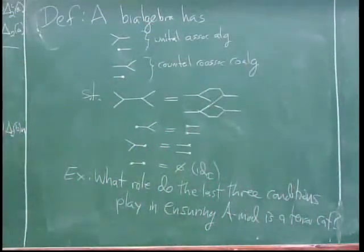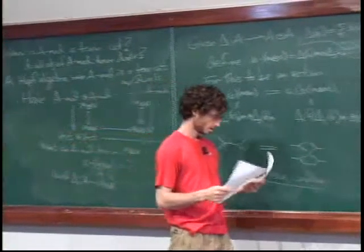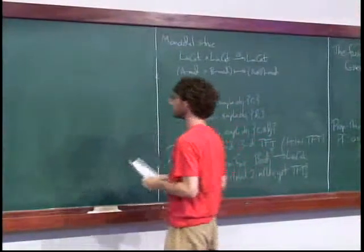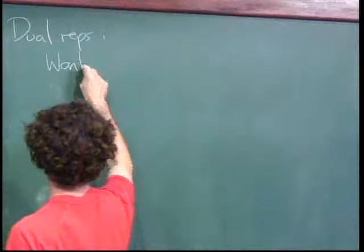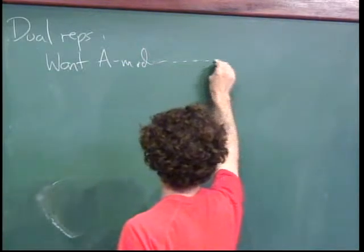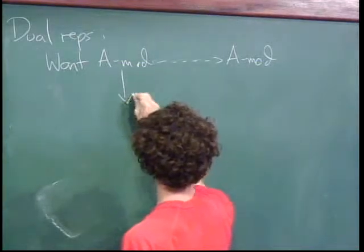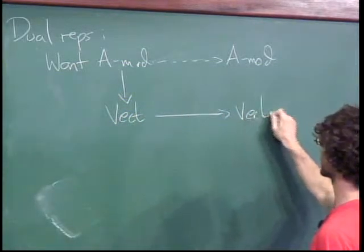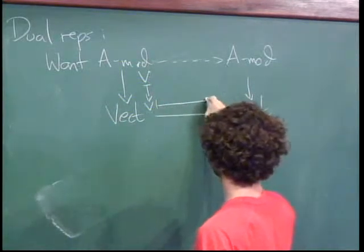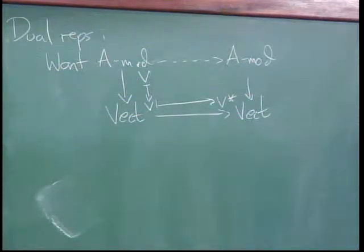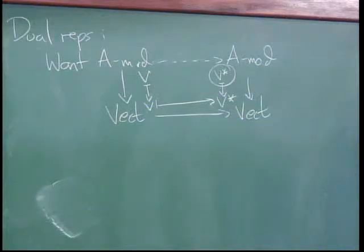What more do we need on A to have dual representations? We want a map from A-mod to A-mod taking V to its dual representation V* = Hom(V, ℂ), and we want this to preserve the forgetful functor to Vect. So we need an A-module structure on V*.